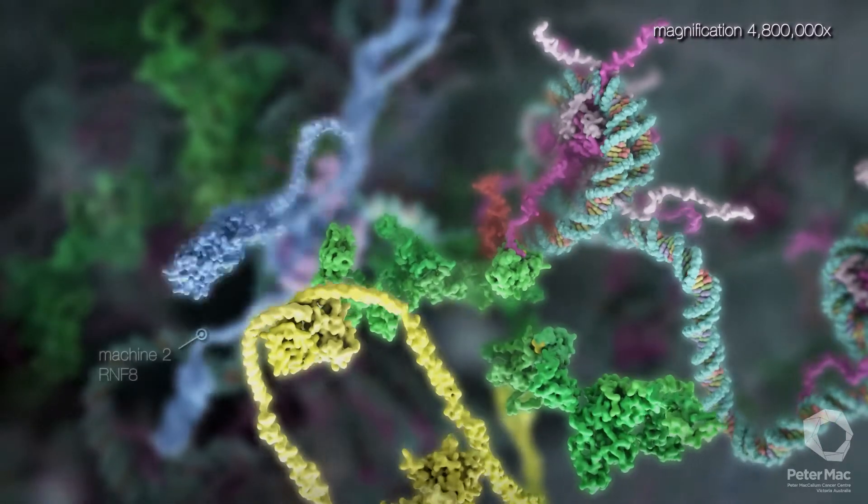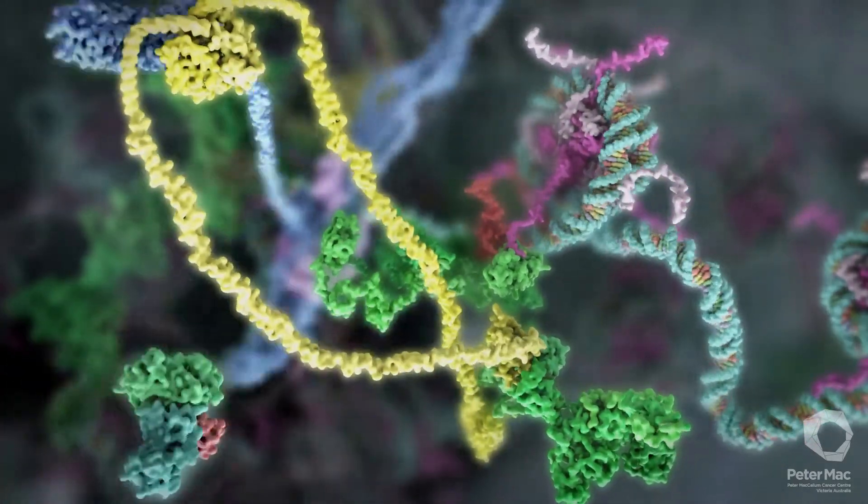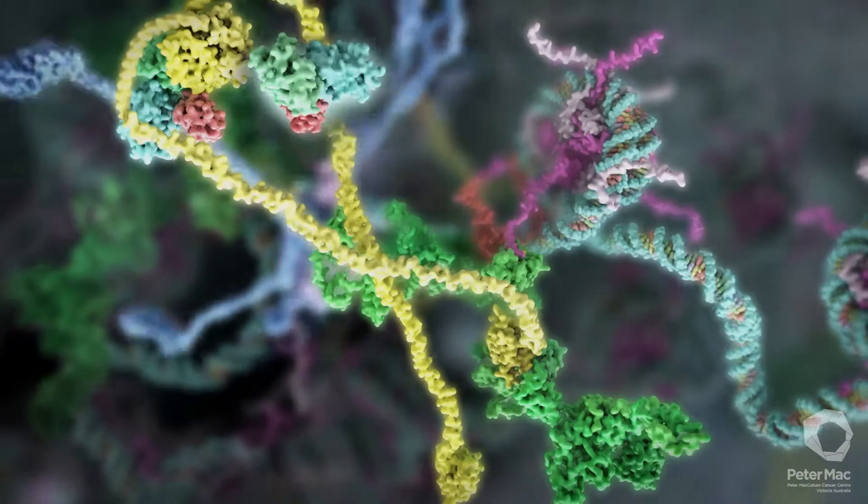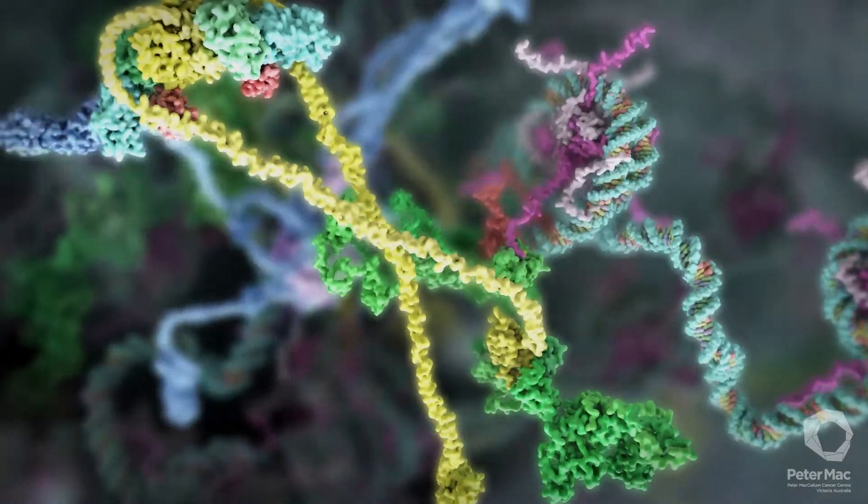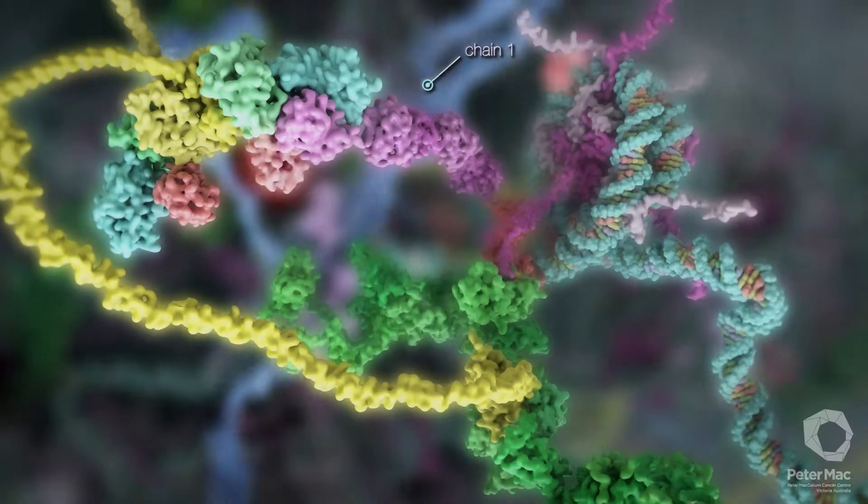This is machine two, assembling into its active form. Machine two builds a chain to link to machine three.